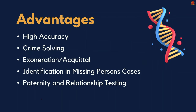Now the important advantages of DNA profiling. It is highly accurate, providing a reliable tool in forensic investigations and legal proceedings. It helps solve crimes by matching DNA from crime scenes with suspects, potentially identifying criminals who might otherwise remain undetected. DNA profiling also helps acquit individuals who are wrongfully accused or convicted by proving they were not involved. It assists in identifying missing persons and unidentified bodies, providing closure to families. It is also used to establish biological relationships in paternity tests and other family disputes, and in genetic research.